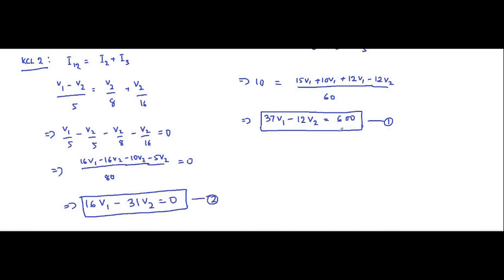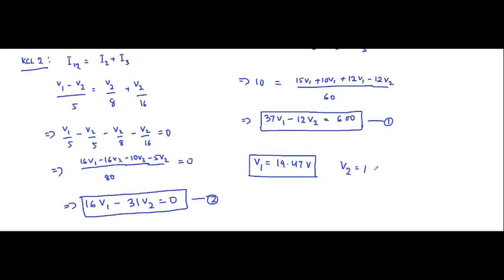Now we solve equations 1 and 2. You can use the variable cancellation method or use a scientific calculator in equation mode. When we solve, we get V1 equals 19.47 volts and V2 equals 10.052 volts.